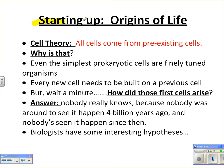Let's talk about the origins of life. In a previous review session, we talked about the cell theory, and one of its components states that all cells come from pre-existing cells. Why can't cells just form on their own if you mix the right molecules together? Even the simplest prokaryotic cells are finely tuned organisms, and organization like that doesn't just pop up on its own — every new cell needs to be built on a previous cell. But this can't be completely right, because life on Earth had to start sometime in the past, and whatever those first cells were, they didn't come from pre-existing cells. So how did the first cells arise?